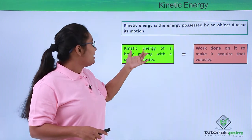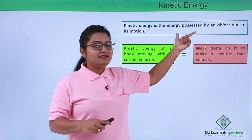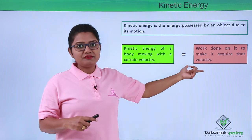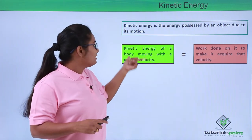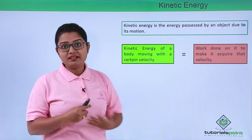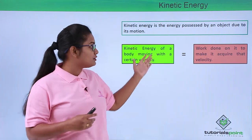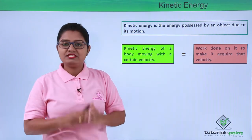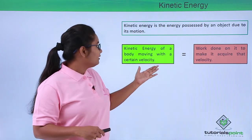When we want to find the kinetic energy of a moving body, we just need to find out the work that has been done on the body to acquire the velocity, and that will give us the value or the amount of kinetic energy of the object. We have already seen that energy and work are measured in the same unit, which is joules.